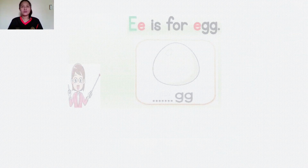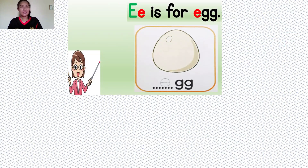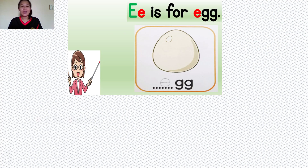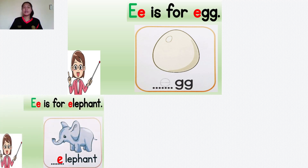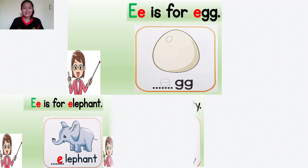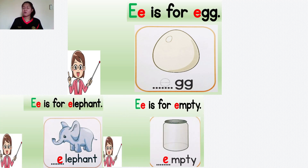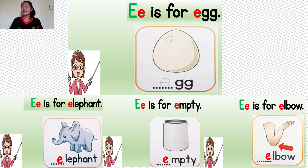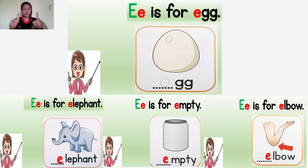Now let's see the word. The letter E is for egg. Egg. The letter E is for elephant. Elephant. The letter E is for empty. Empty. Good. The letter E is for elbow. Elbow. Good job!